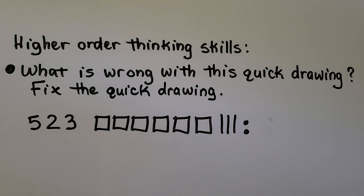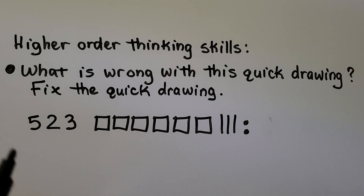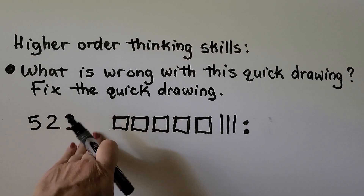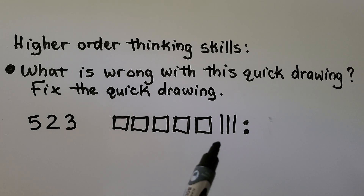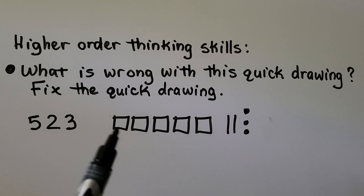Let's try some higher order thinking skills — we need to think a little harder. What is wrong with this quick drawing? Our number is 523. There should be 5 hundreds, but there are 6 squares — we need to take one away. There should be 2 tens, but I see 3 lines — we need to take one away. There should be 3 ones, but I only see 2 dots — we need another dot. Now we have 5 hundreds, 2 tens, 3 ones and our quick drawing is correct.